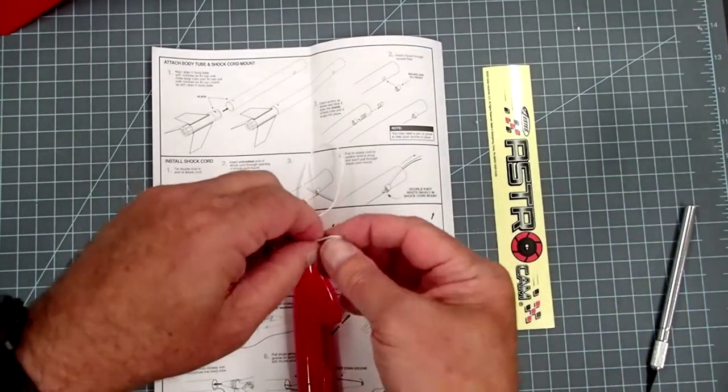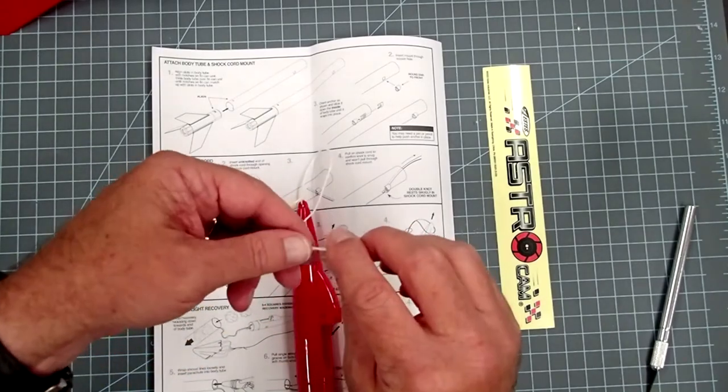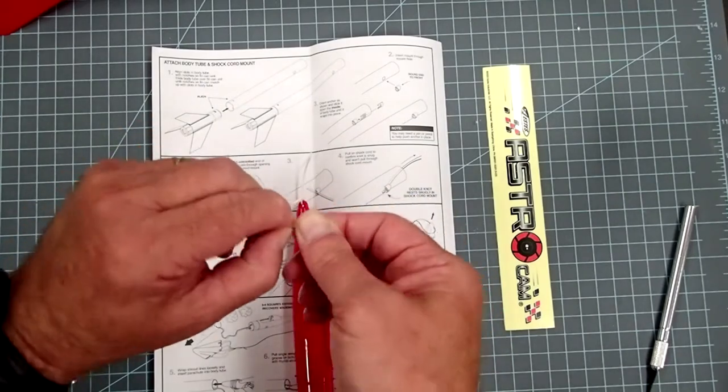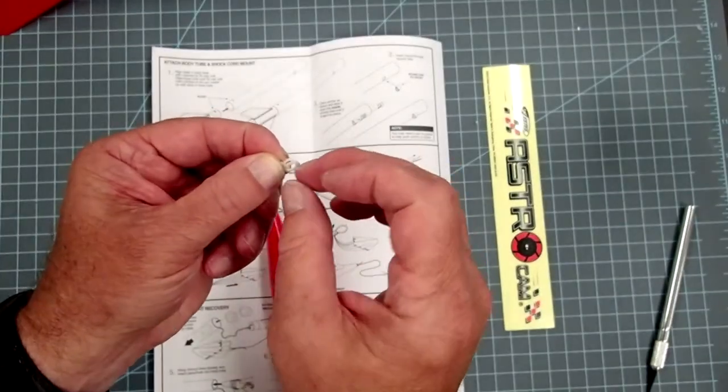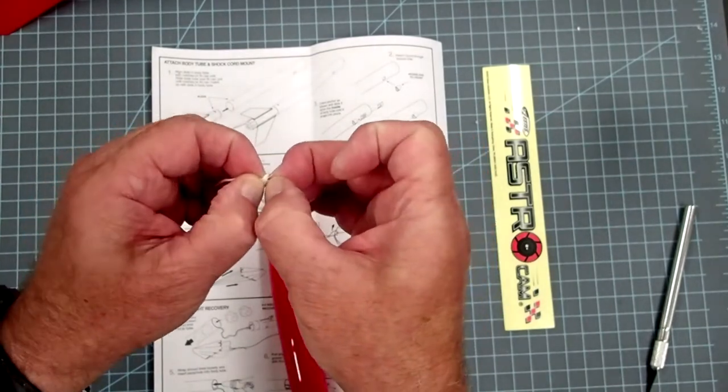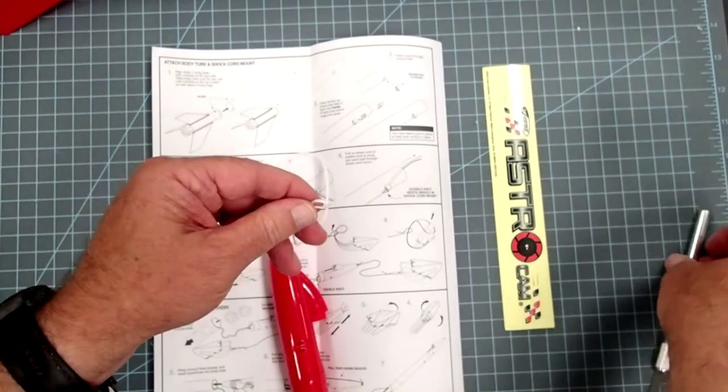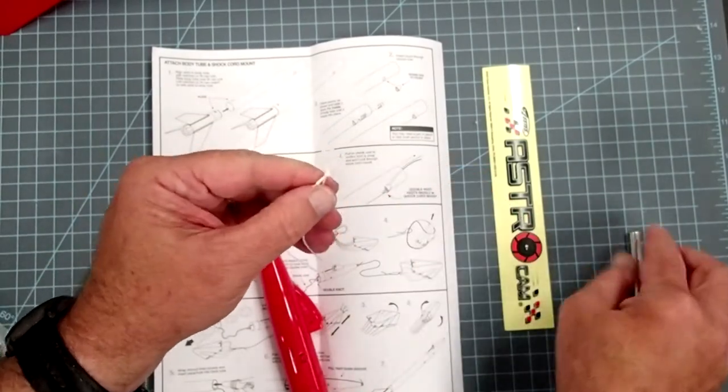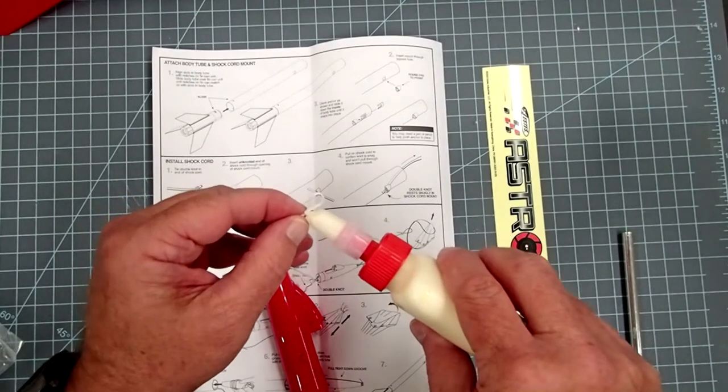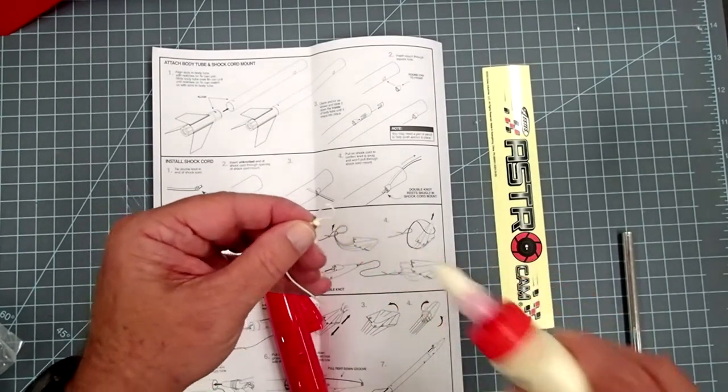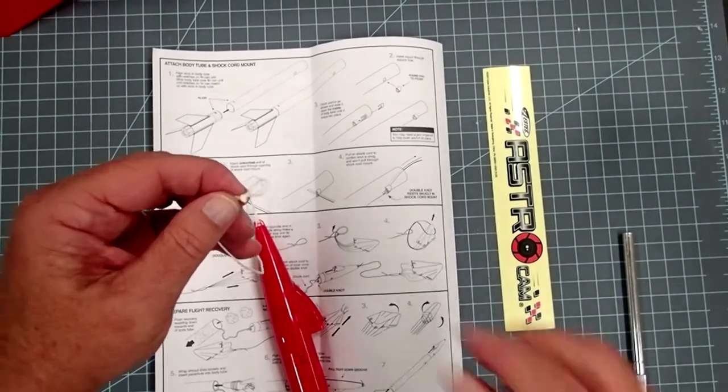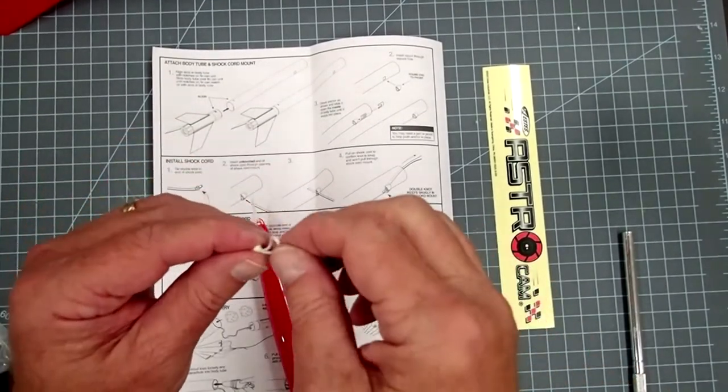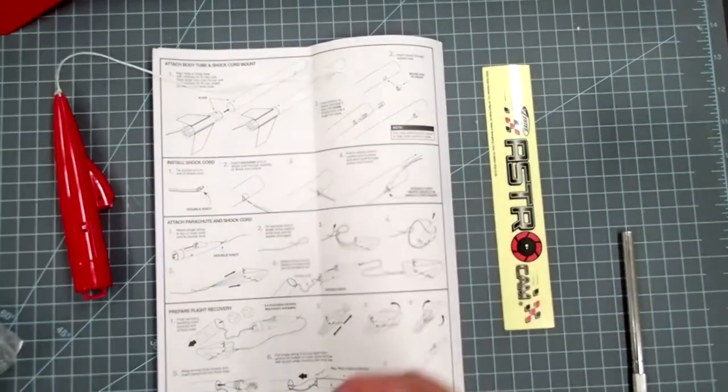And then the other end of this, we simply tie a loop into using an overhand fishing knot. Also called a water knot. And this does not need to be a big loop. The size kind of depends on your fingers. There we go. I'm just going to use the handle of my hobby knife here to allow me to pull on that greater. And here again, this is a good place just to put a little tiny dab of glue. Just enough to work that in.